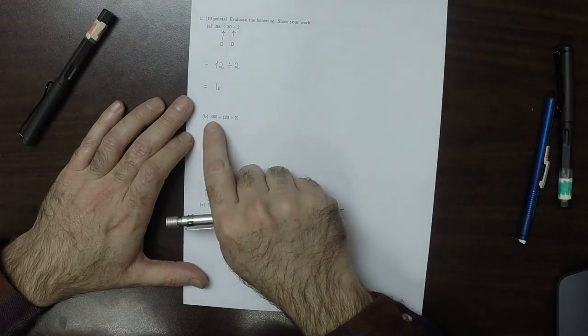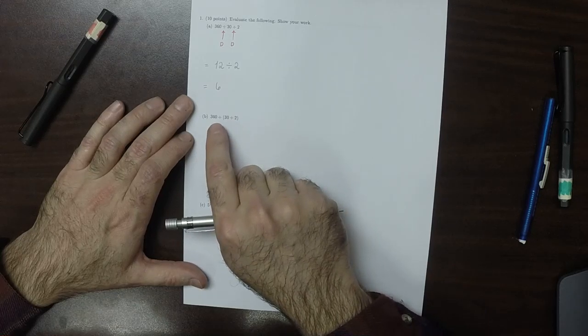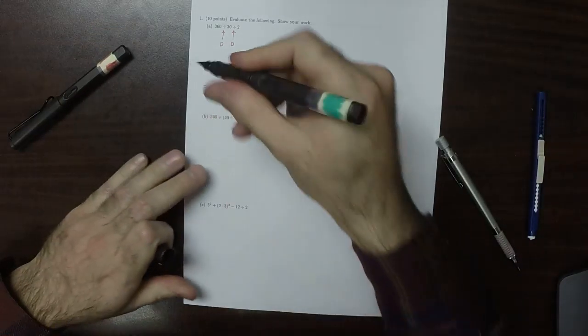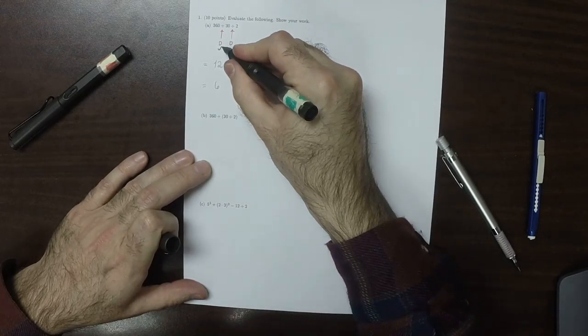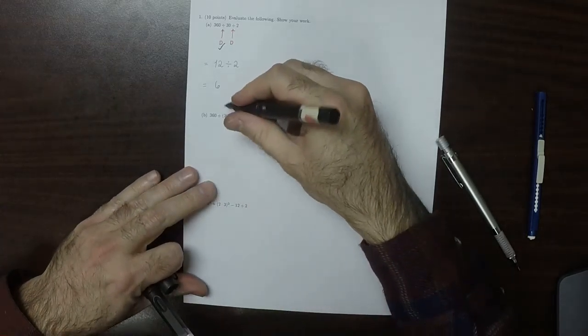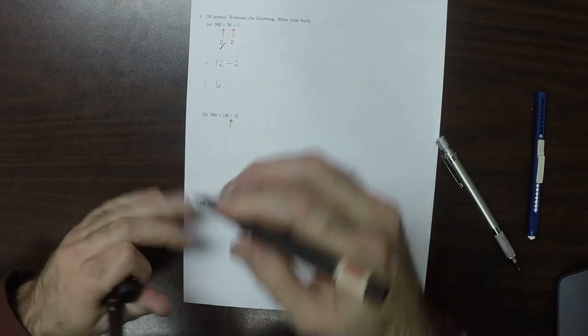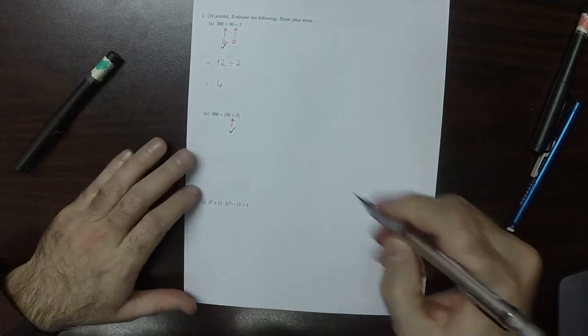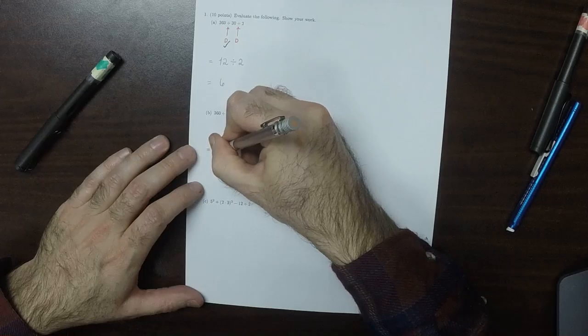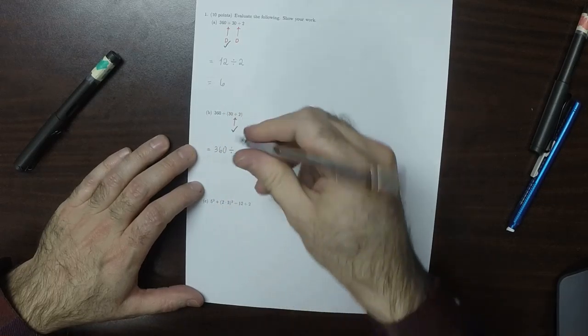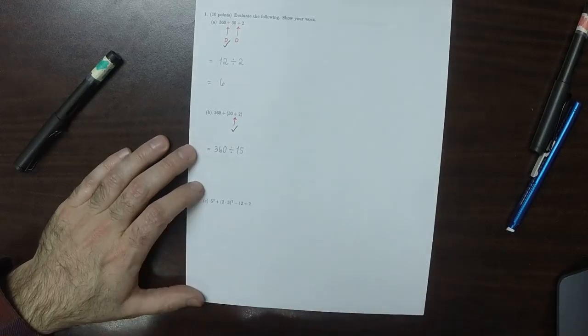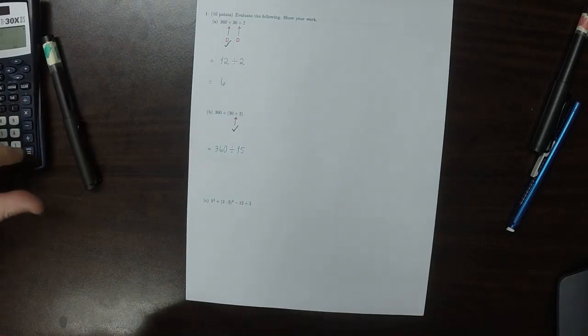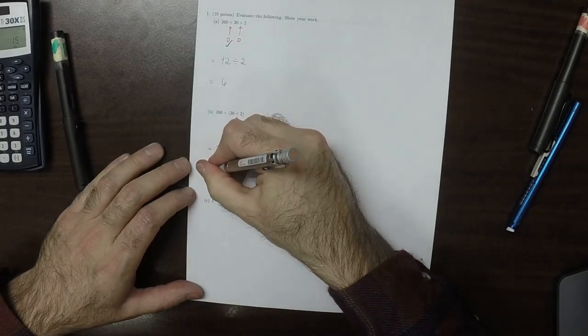Now, this is the same numbers, 36, 30, and 2, and the same operations, divide and divide. So this is the one we do first on part A. However, because this one is inside of parentheses, that is the one we must do first in part B. So this is 360 divide by 15, which should be 24.